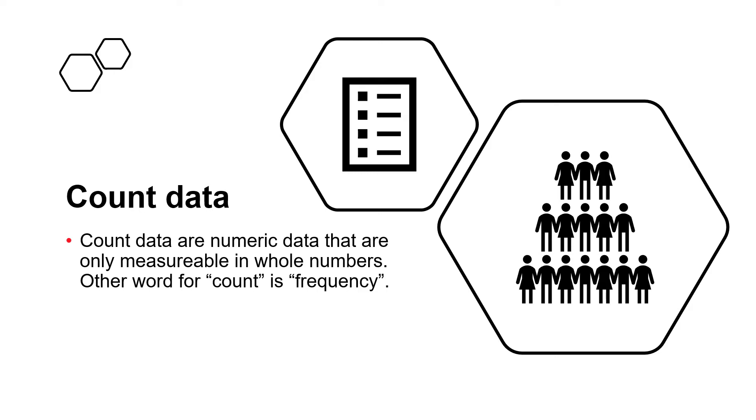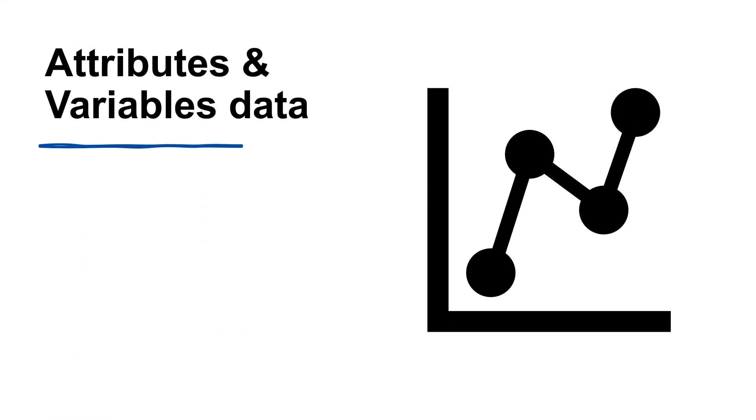In some contexts, we'll use different terminology to refer to data types. When we talk about control charts and quality tools for analyzing processes, we will refer to categorical and count data as attribute data, and we will refer to continuous data as variables data. These are the terms traditionally used for this analysis.